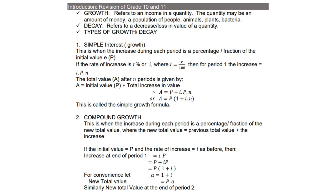Let's look at the introduction to Grade 10 and 11 content, where we look at growth and decay and the different types. Growth refers to an increase in quantity — the quantity may be an amount of money, a population of people, animals, plants, bacteria, etc. Decay refers to a decrease or loss in value of a quantity.